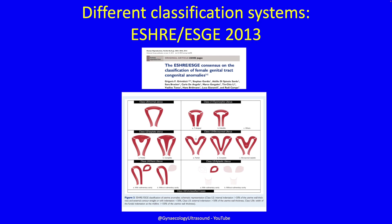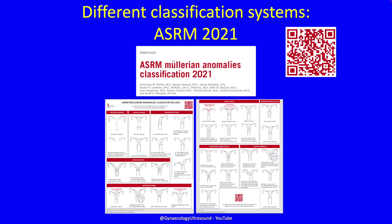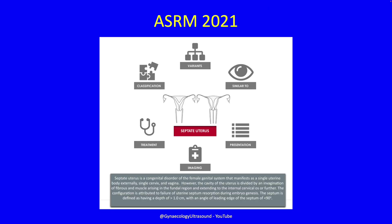ESHRE also came up with a classification system in 2013 — I've never used that one. And then the ASRM published one four years ago, which is really, really good. I would encourage you to take a photo of that QR code and look at the paper. There's an app with it, and it gives you information on presentation, what the appearance is similar to, how to manage patients with such abnormalities, and how to optimise your imaging. This is an example for the septate uterus showing all the different bits of information the app will give you.